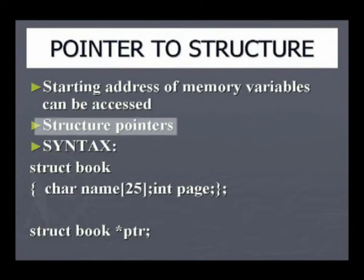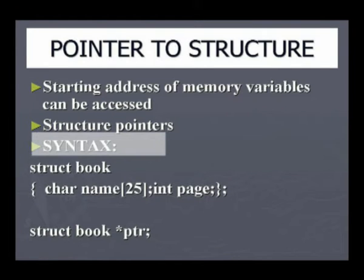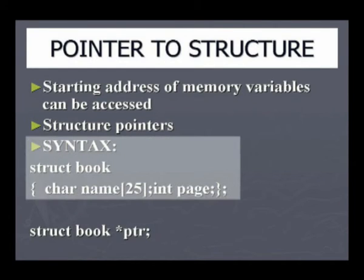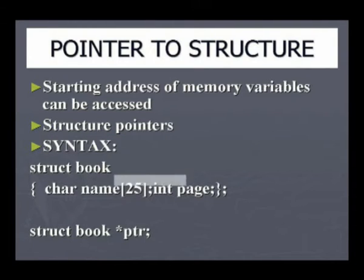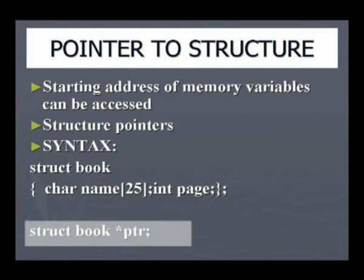When we say a pointer to a structure, another name for it is a structure pointer. This is how the syntax is declared. The declaration is the same — struct, struct tag, and the members of the structure enclosed within braces and a semicolon. The declaration of the variable is struct book — that is the struct tag. Instead of simply giving a variable name, here we have to give a pointer variable name, ended with a semicolon. That is the only difference in the declaration of the structure pointer.